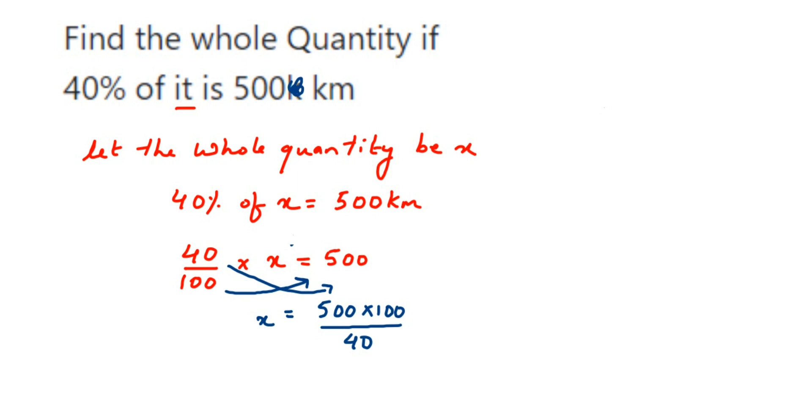Then we're going to cancel the numbers here. 40 and 100 cancel in 10 table: 10 fours are 40 and 10 tens are 100. And then we can cancel here 4 and 10 again in 2 table: 2 twos are 4 and 2 fives are 10.